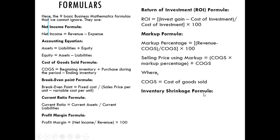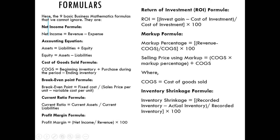Inventory shrinkage formula: this tells us how the inventory has actually reduced. Inventory shrinkage equals recorded inventory minus actual inventory, divided by recorded inventory, times 100. Shrinkage means reduced. When you go to the store and account for stock, what was in the store (recorded inventory) minus what is actually in the store (actual inventory), divided by what was in the store, gives us the inventory shrinkage percentage.